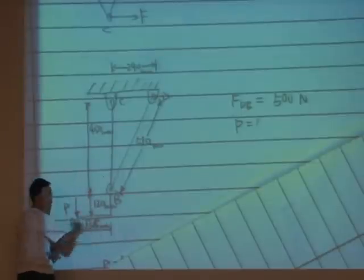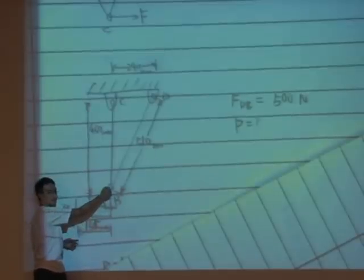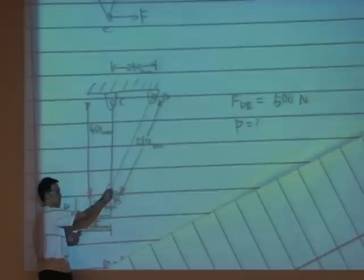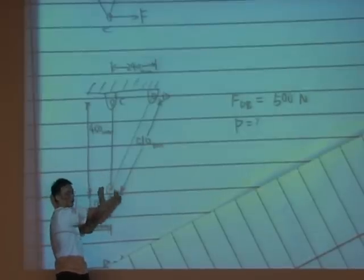This is an L-shaped member, L-shaped structure. This one here is a rotatable joint. This member BD is attached to this member at this joint. So this one is free rotation.